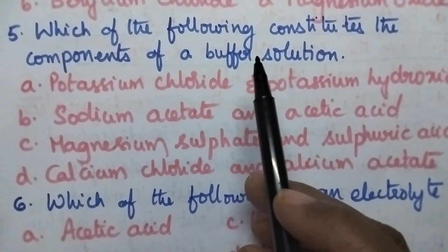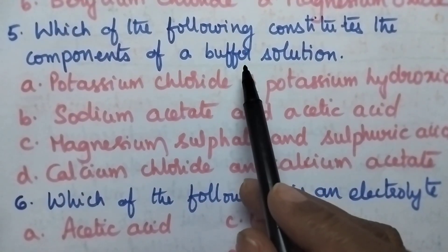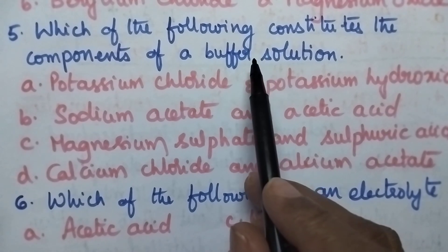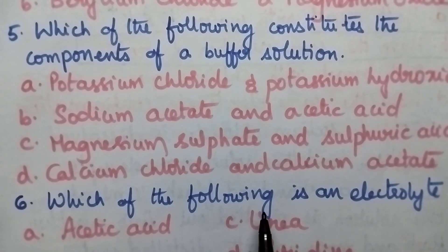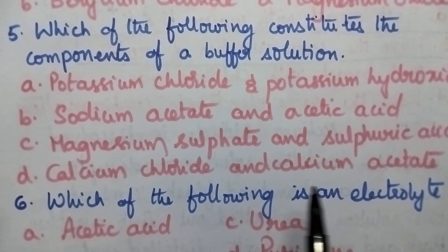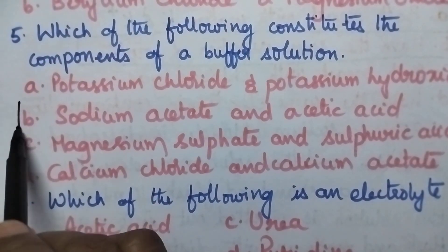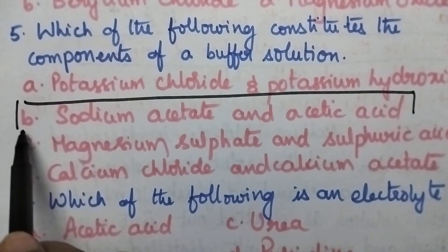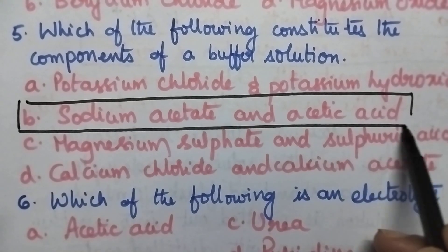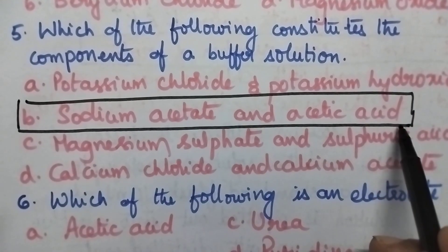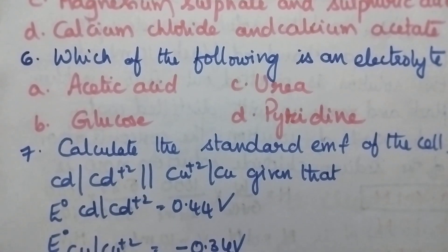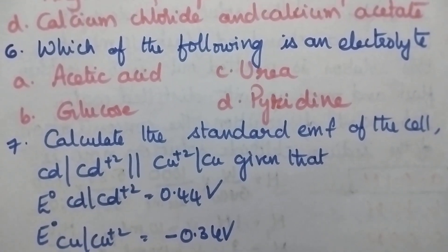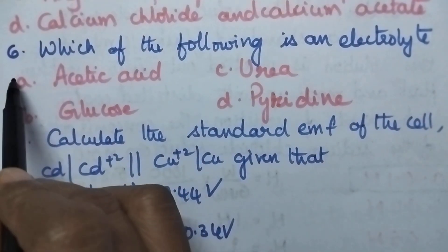Which of the following constitutes the components of a buffer solution? A buffer solution may be of two types: acidic and basic. A buffer solution is always prepared from a weak acid or weak base. Option B — sodium acetate and acetic acid — constitutes a buffer solution, and is a good example of an acidic buffer. Acetic acid is a weak electrolyte and the remaining options are non-electrolytes.